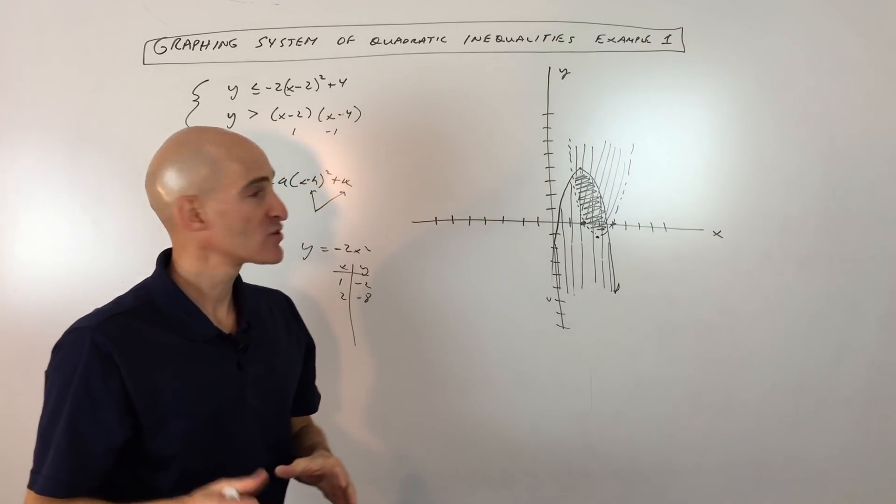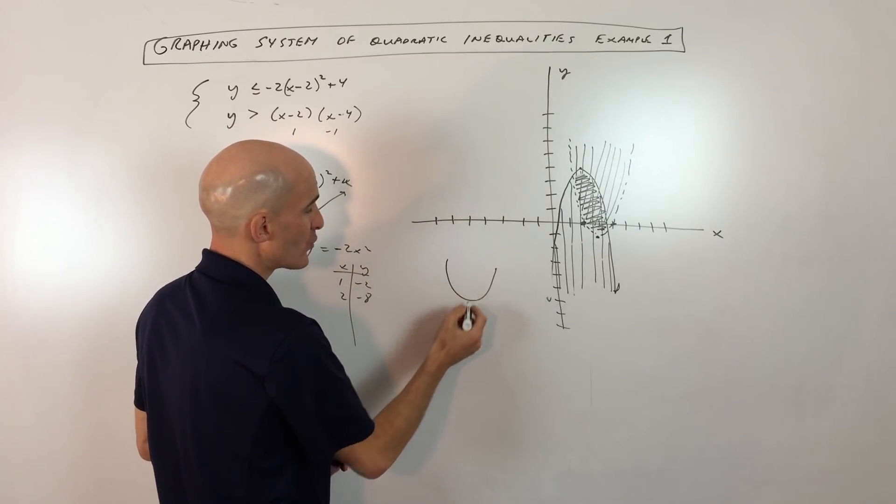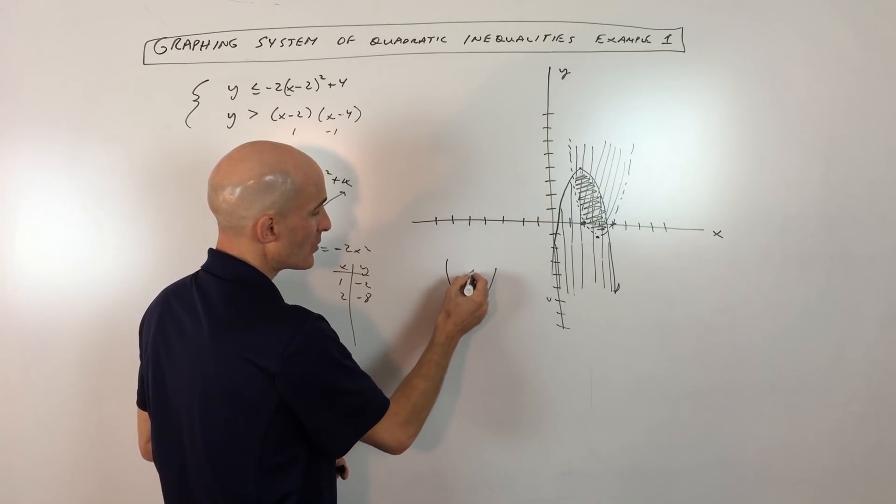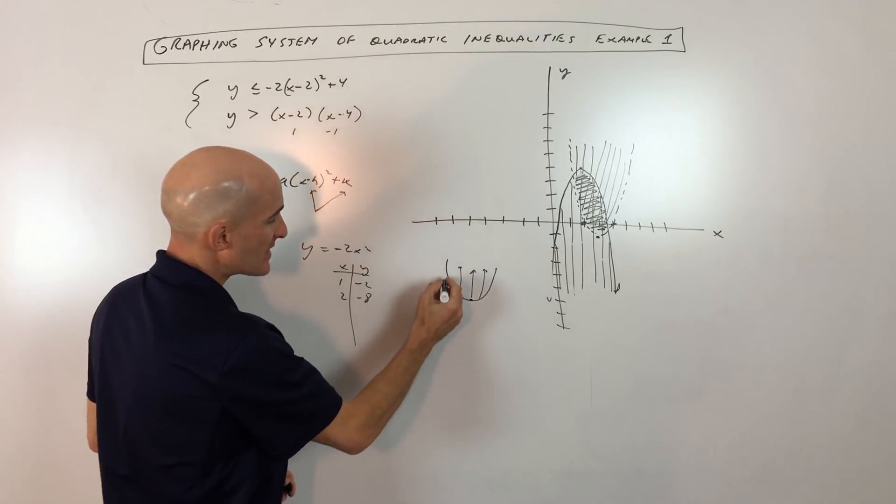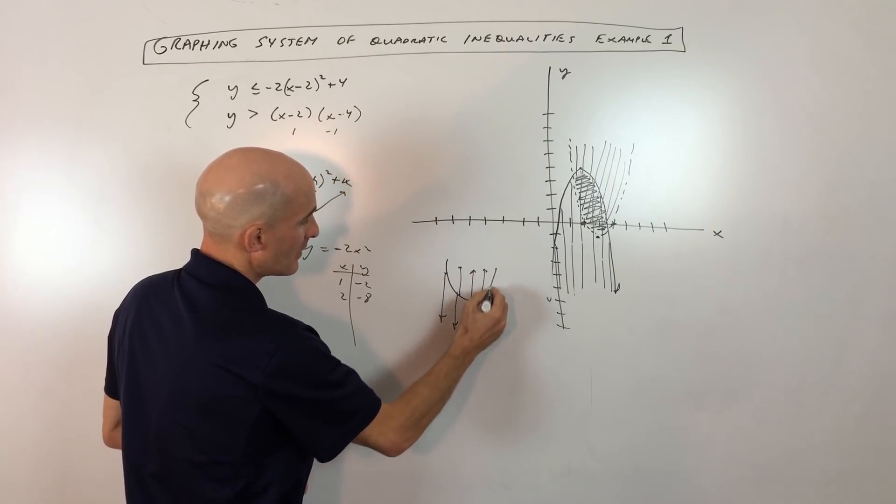You don't wanna get caught where some students think like inside and outside. Don't think that way. Just think if this is your parabola, greater than, pick any point, shade straight up. That's if the y is by itself. That means the y values are greater. If it's less than, then you would pick a point on the graph and you would shade below, like that.